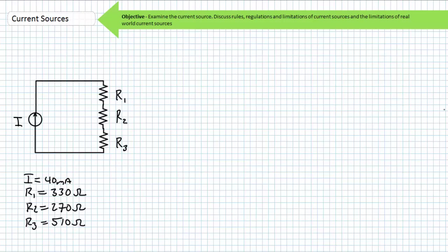Consider this illustrated example of a 40 milliampere current source placed in series with a 330, a 270, and a 510 ohm resistor. This is a totally different ball game than our previous parallel circuits, but well within the reach of those individuals with an understanding of basic series circuit properties and Ohm's law. The most fundamental property of series circuits is that current through elements in a series relationship is the same. This current source, being the only active source in our circuit, must therefore induce 40 milliamps of current through the whole circuit. IS equals I1 equals I2 equals I3.